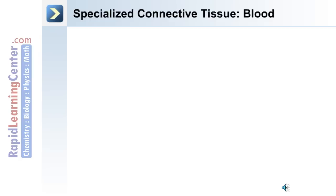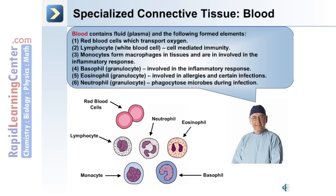Blood is a specialized connective tissue. It contains a fluid portion known as plasma, and the following formed elements or cells: red blood cells, which function to transport oxygen; lymphocytes, which are white blood cells that perform cell-mediated immunity; monocytes, which form macrophages in the tissues and are involved in the inflammatory response and phagocytosis; granulocytes known as basophils, which are involved in the inflammatory response; and granulocytes known as eosinophils, which perform phagocytosis of microbes during infections.